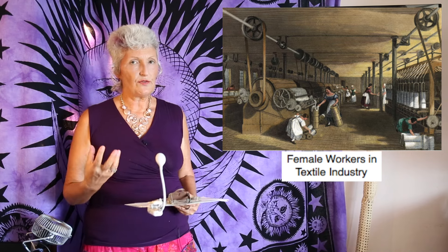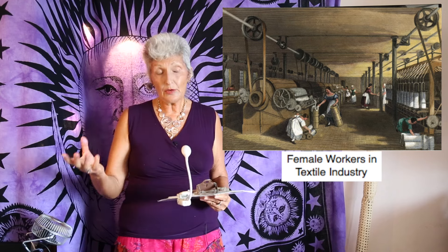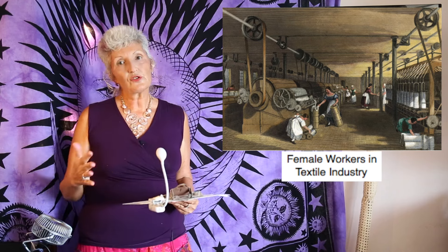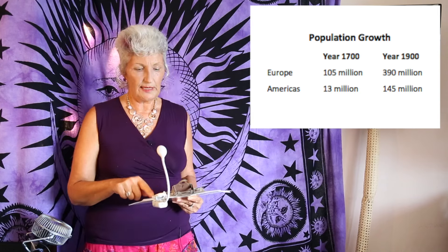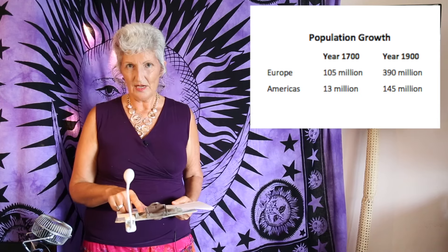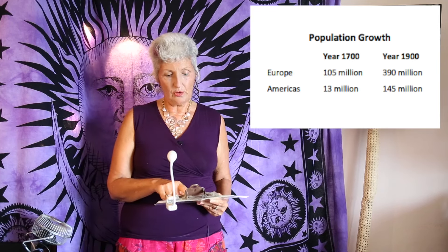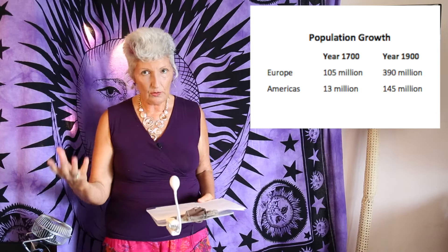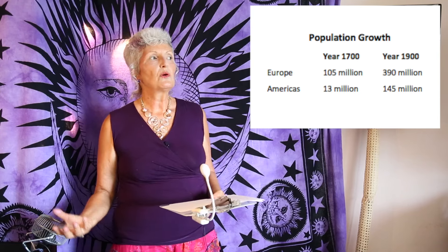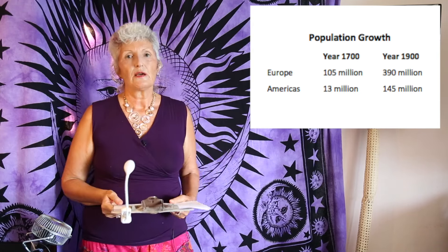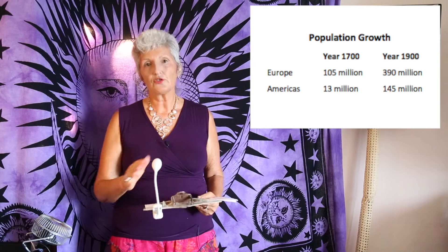What is the effect of this industrial system on common people? One notable result is the growth of population — the growth becomes exponential. From the year 1700 to the year 1900, the population of Europe goes from 105 million to 390 million — almost a four-fold increase. The population of the Americas goes from 13 million to 145 million, which is more than a ten-fold increase. Of course, that includes many people who migrate at this time from European countries to the countries of the new world.